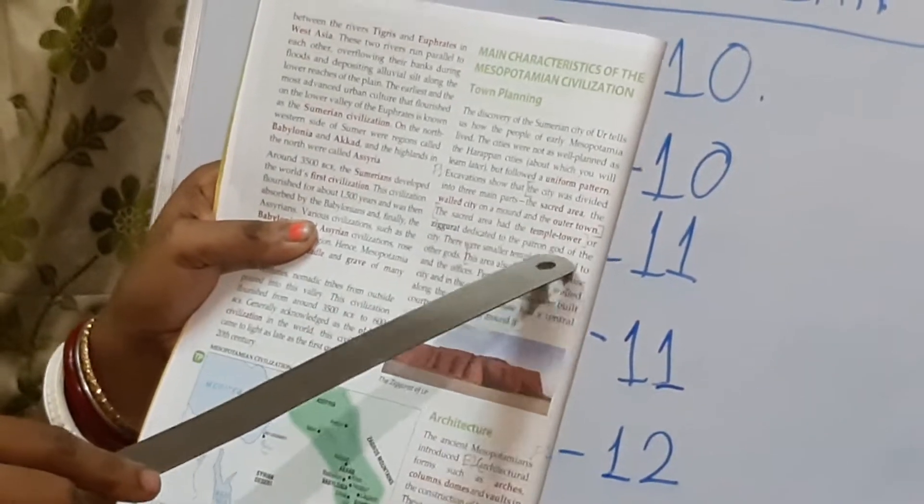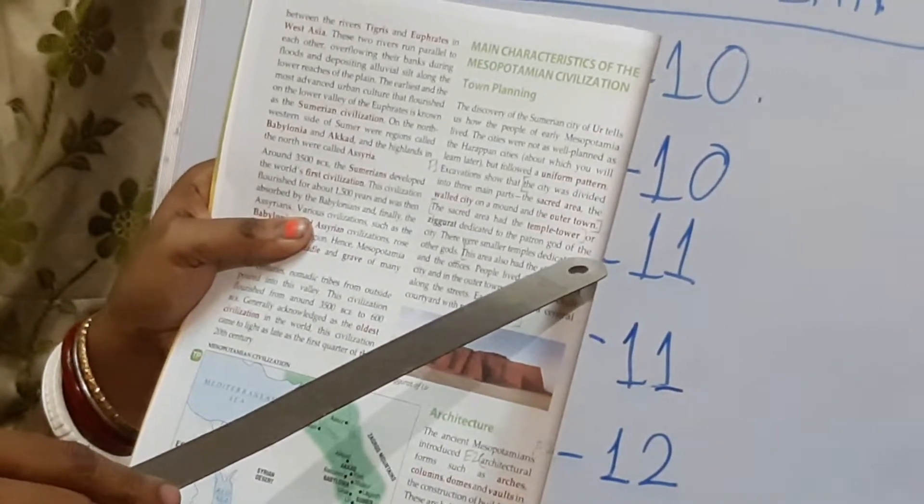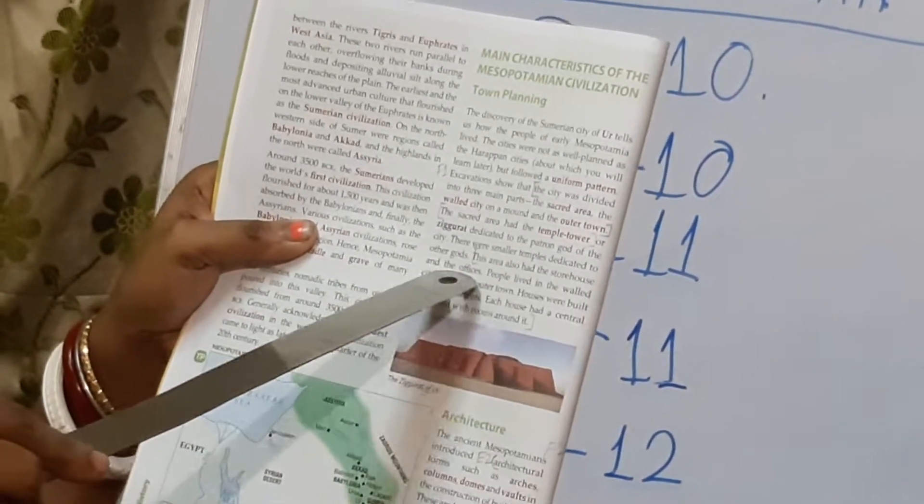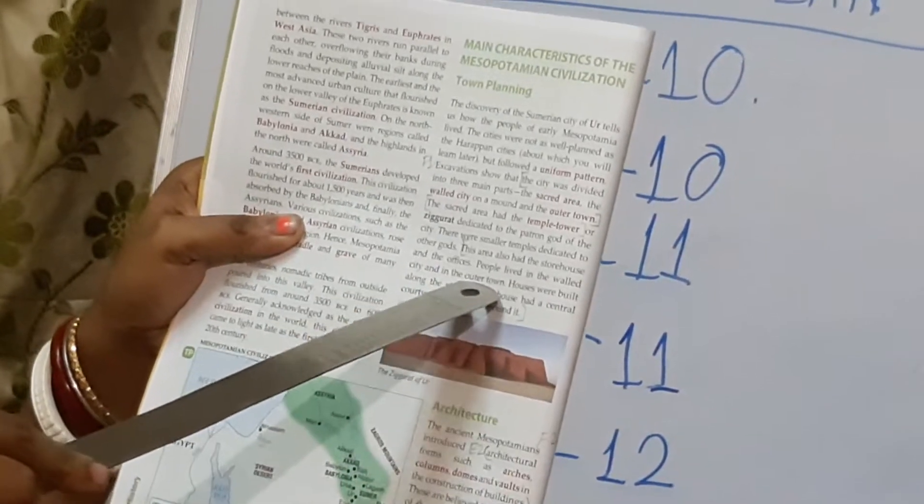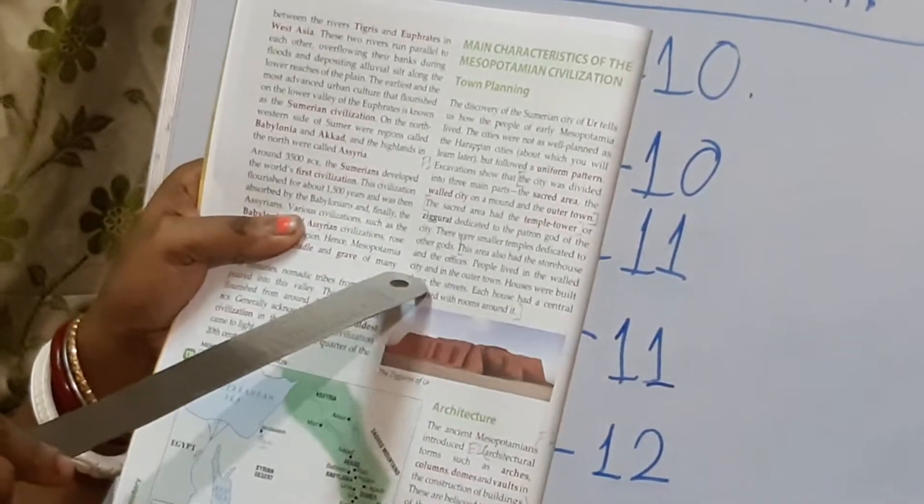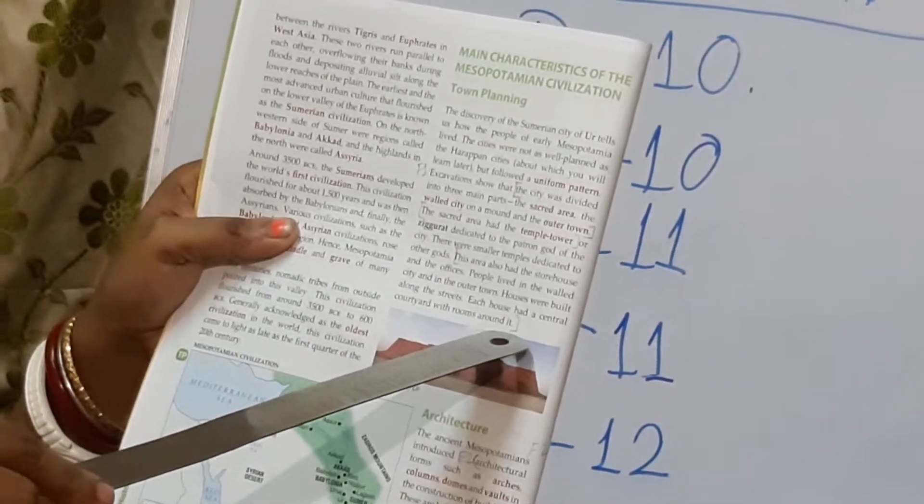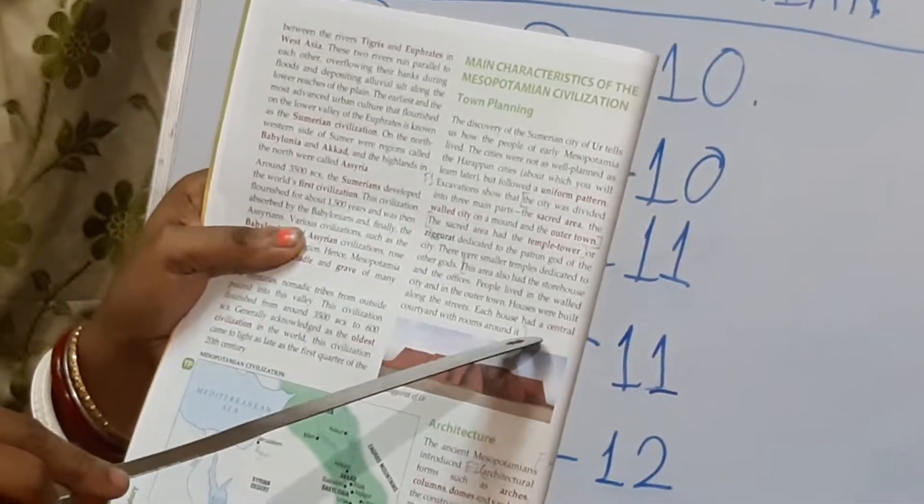Now see the main features of town planning. This is F1 answer. You have to write in brief form. So you have to start like this: the Mesopotamian city was divided into three main parts - the sacred area, the walled city on a mound and the outer towns. The sacred area had the temple tower. Up to this you can finish.